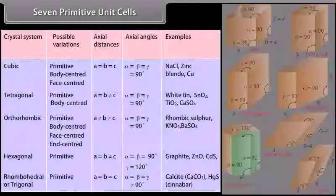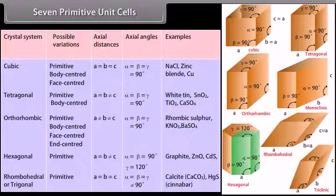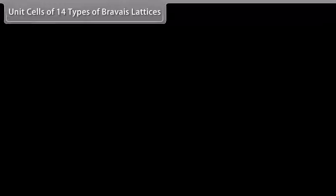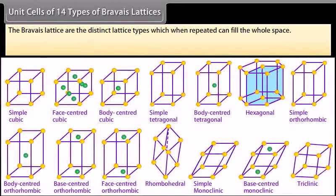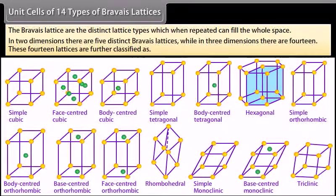There are 7 types of primitive unit cells. Their characteristics, along with the centered unit cells they can form, have been listed in the table. Unit cells are of 14 types, known as Bravais lattices. The Bravais lattices are the distinct lattice types which, when repeated, can fill the whole space. In 2 dimensions there are 5 distinct Bravais lattices, while in 3 dimensions there are 14, and these 14 lattices are further classified.